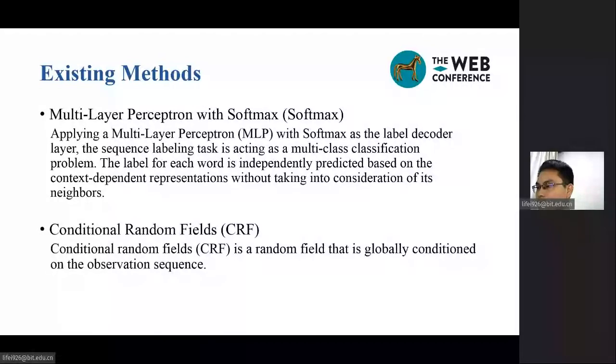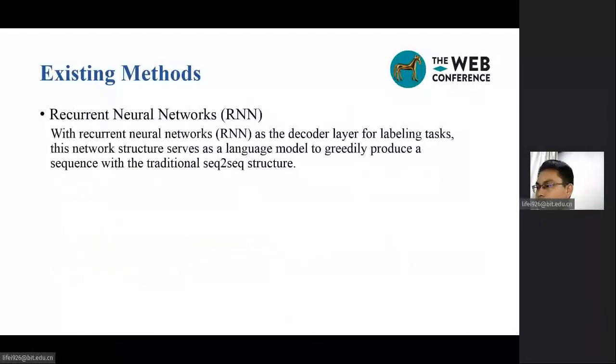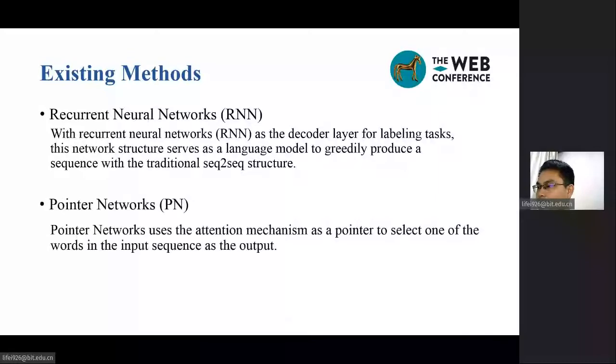Conditional random fields is a random field that is globally conditioned on the observation sequence. With recurrent neural networks as the decoder layer for labeling tasks, this network structure serves as a language model to produce a sequence with the traditional sequence-to-sequence structure. Pointer networks uses the attention mechanism as a pointer to select one of the words in the input sequence as the output.